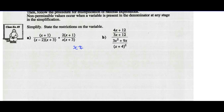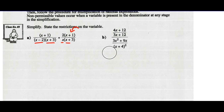Once I'm done factoring, I state non-permissible values. In the first denominator, x cannot equal positive 2. In the next denominator factor, x cannot equal negative 3. In the next variable factor, x cannot equal 0. And x cannot equal negative 3 again — I already have that one. I must also look at the numerator of the divisor: x plus 1 cannot equal 0, so x cannot equal negative 1. So x cannot equal 2, negative 3, 0, or negative 1.